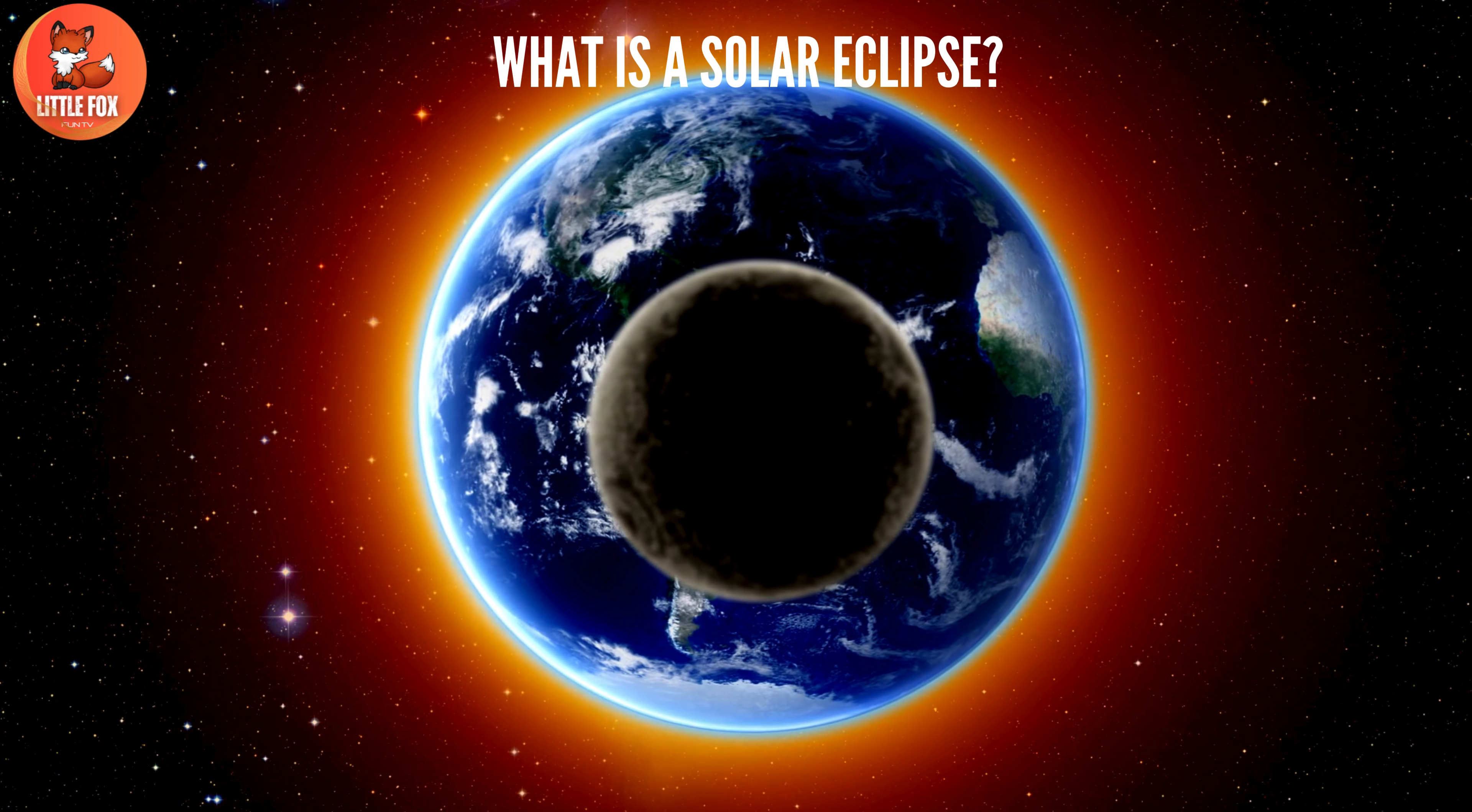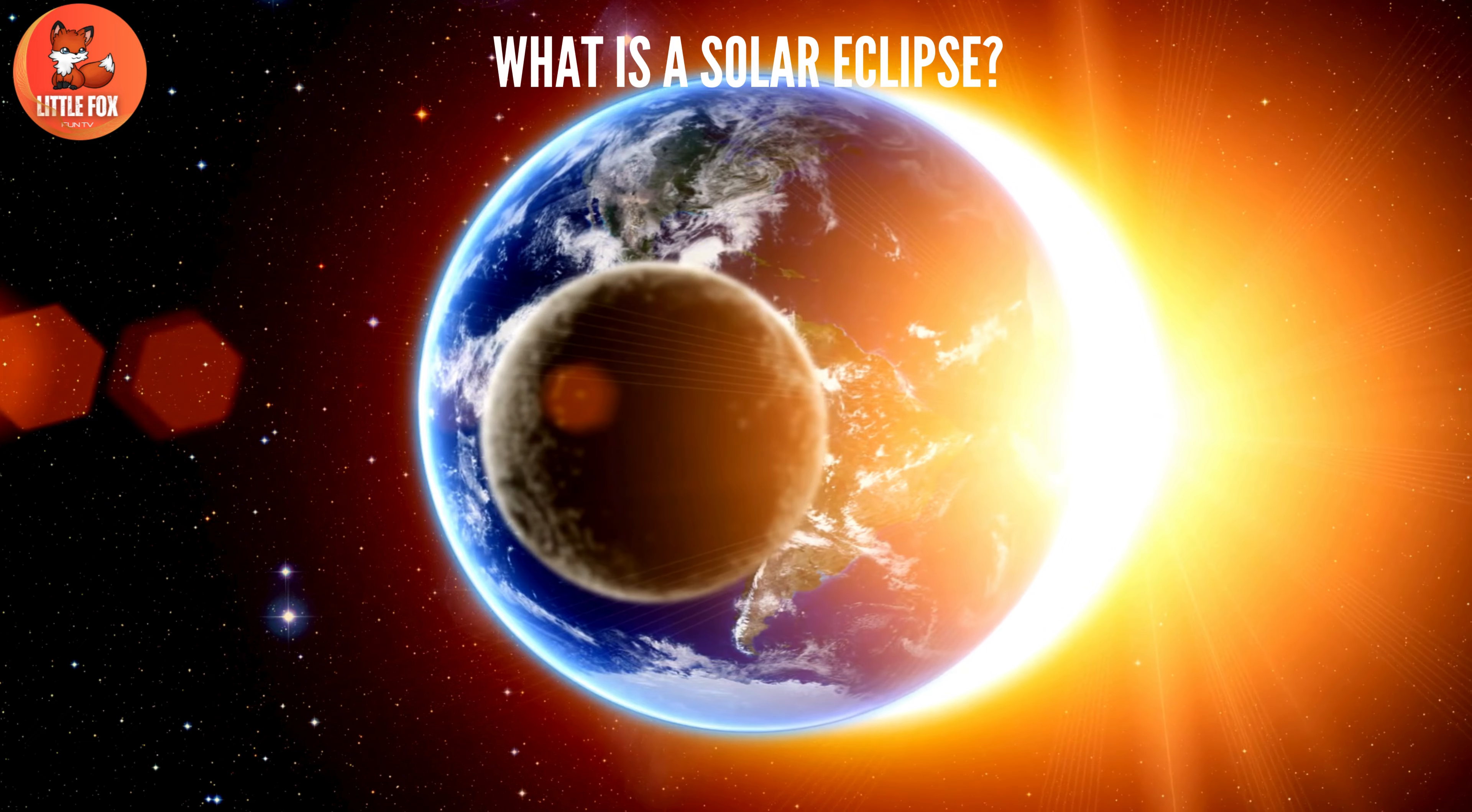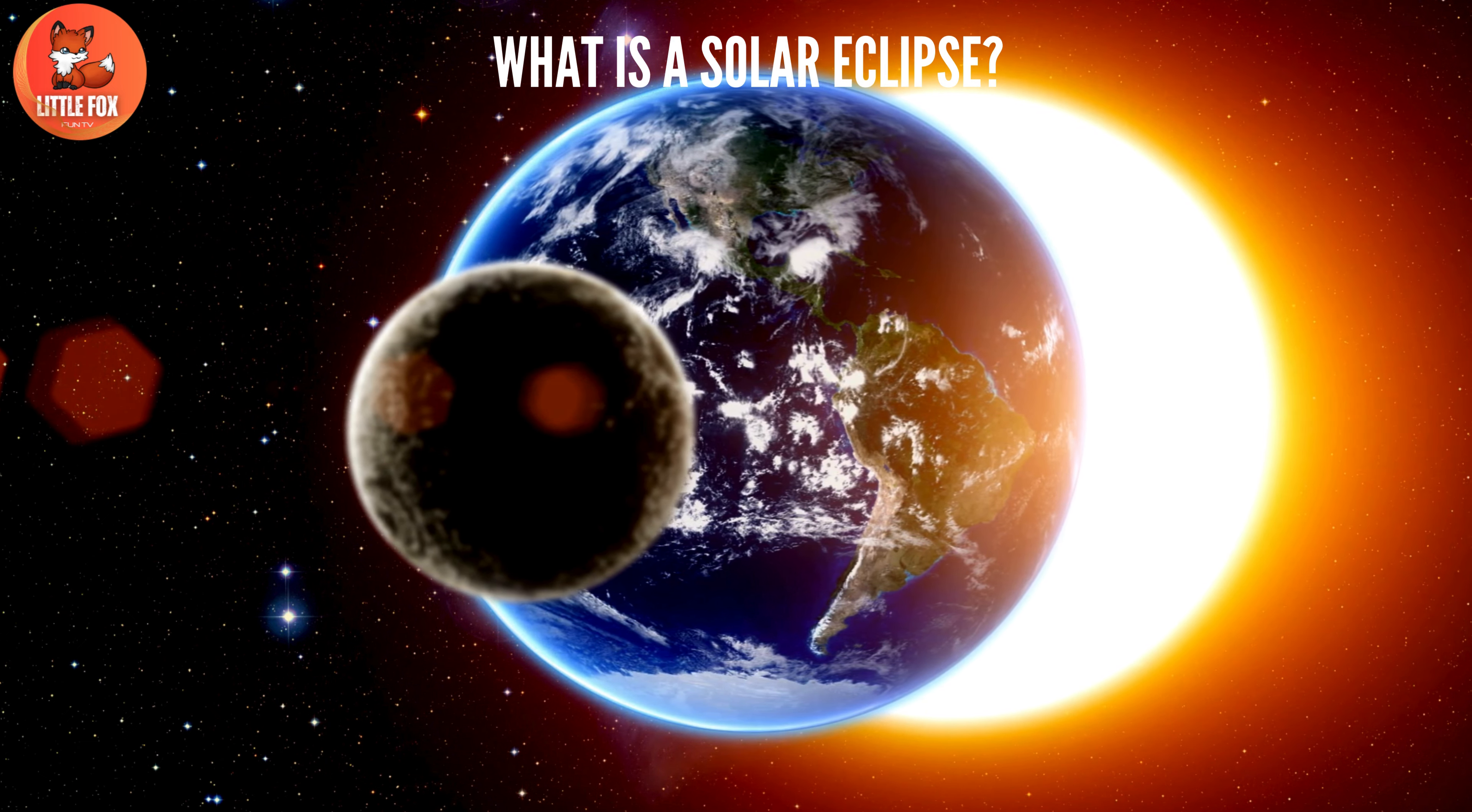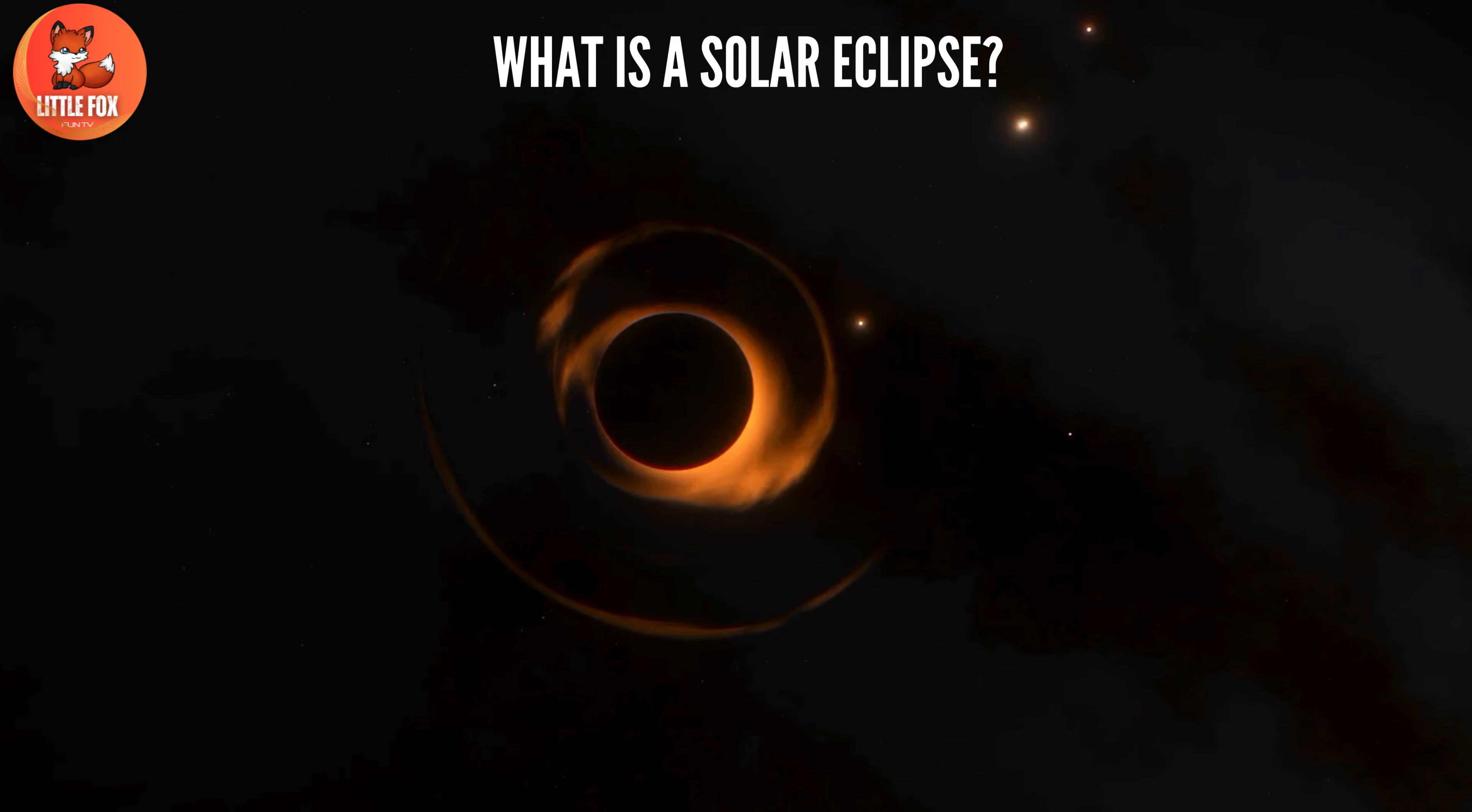Now, sometimes it's a partial eclipse, where the moon only gives the sun a cheeky little peck on the cheek. Other times, it's a total eclipse, where the moon goes all out and pulls the ultimate shadow move, blocking out the sun's rays entirely.